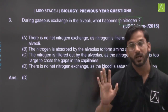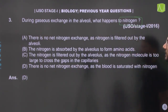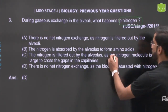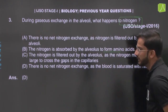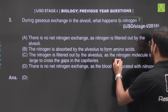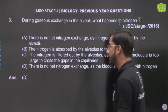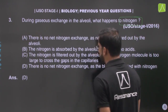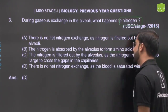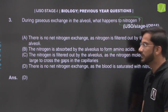Option B says nitrogen is absorbed by the alveoli to form amino acids. Option C says nitrogen is filtered out by the alveoli and nitrogen molecules are too large to cross the gap in the capillaries. Option D says there is no net nitrogen exchange as the blood is saturated with nitrogen. Option D is correct here.